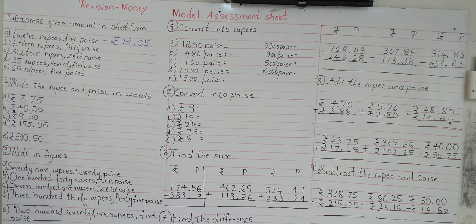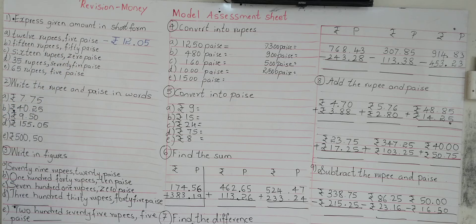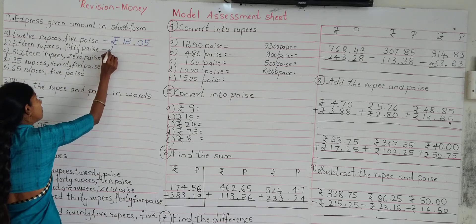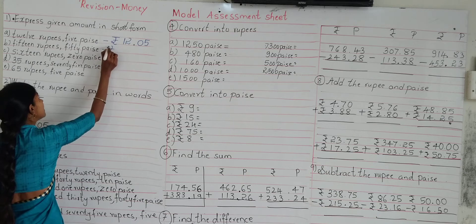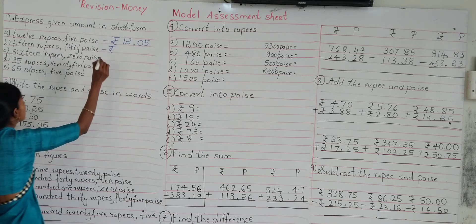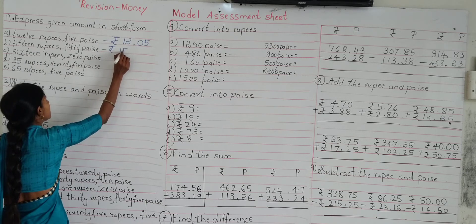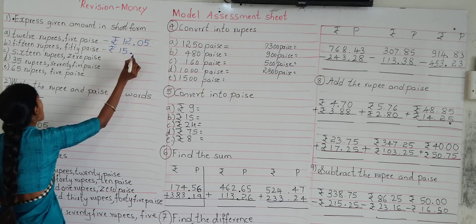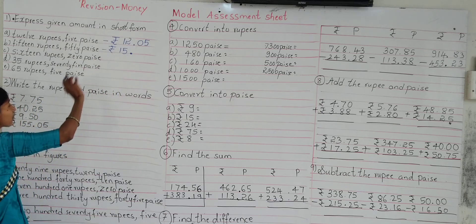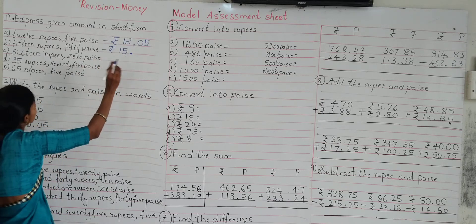Now look at the next one: 15 rupees 55 paisa. Write the symbol of rupee, then how many rupees? 15 rupees. Then insert a dot to separate the rupees and paisa.